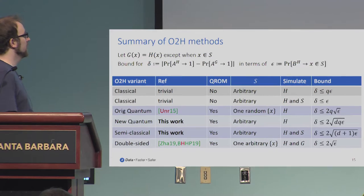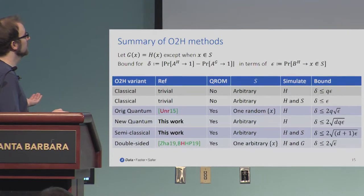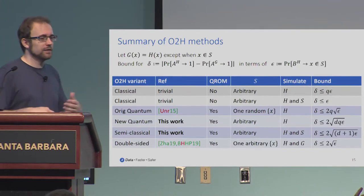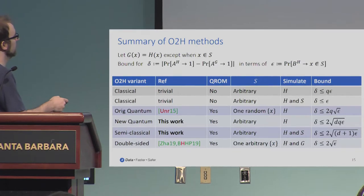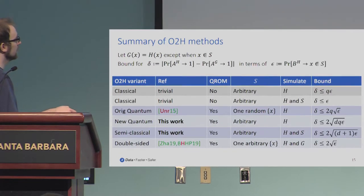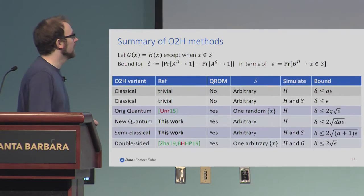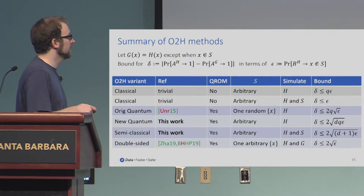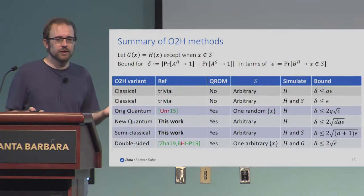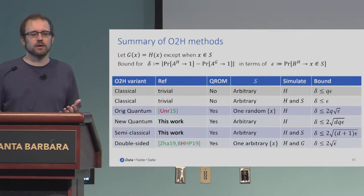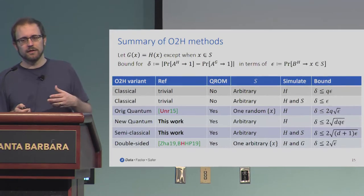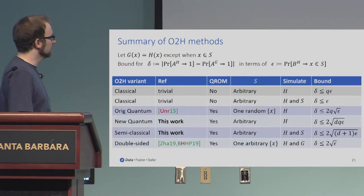As a summary of these various one-way-to-hiding methods: imagine the adversary is trying to distinguish two oracles with probability delta, and the simulator is trying to extract a value from the set where they differ with probability epsilon. In the classic case, if you can recognize it, you get delta less than epsilon. In the quantum case, we've improved Unruh's bound from 2q*sqrt(epsilon) to something like 2*sqrt(dq*epsilon). The bigger difference is that instead of requiring uniformly random oracles that differ in one uniformly random place, now they can be arbitrary oracles possibly jointly distributed in some complicated way that differ in some arbitrary set of places.